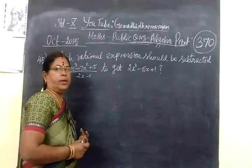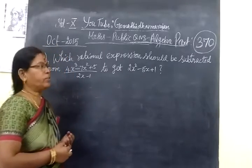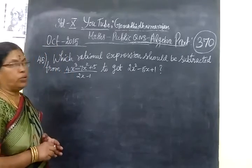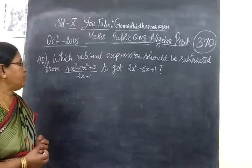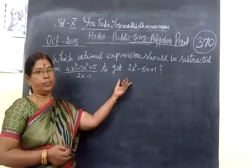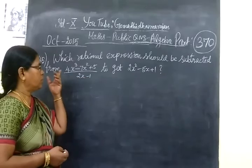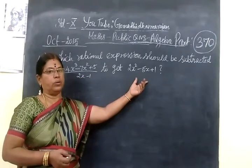Now we see Part 370 in Althivra, Kappai Koshin, October 2015. Which rational expression should be subtracted from this to get this? What rational expression should be separated from this to get this?